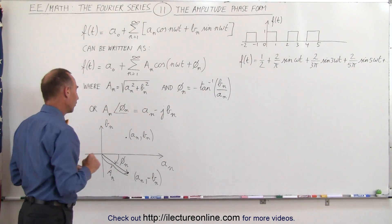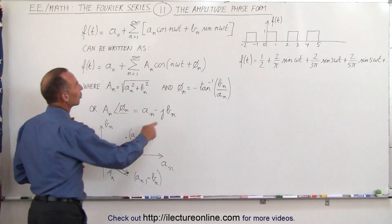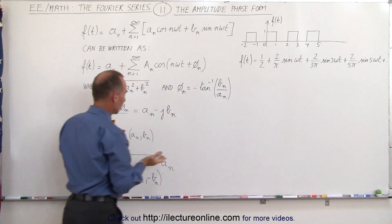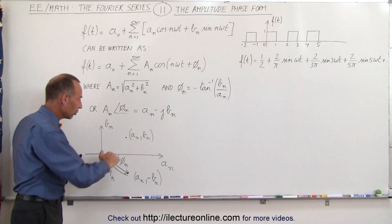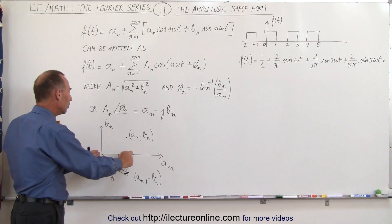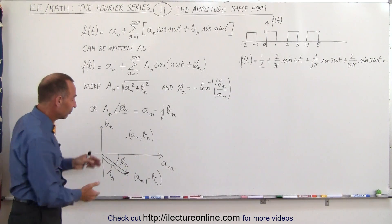And then we have a phase difference, because notice that depending upon the value of a sub-n and b sub-n, either the cosine term will be more important or the sine term will be more important relative to this drawing. In other words, if the a sub-n is much larger than the b sub-n, then we have a small phase angle.